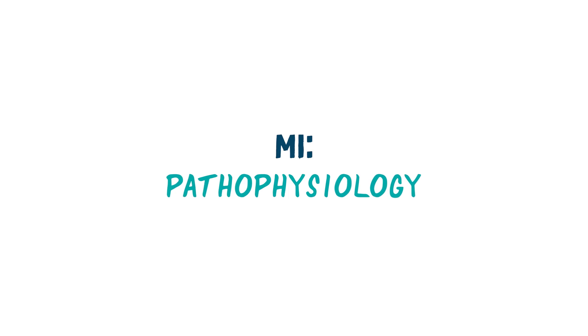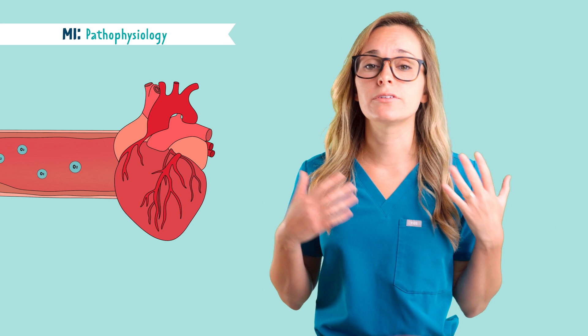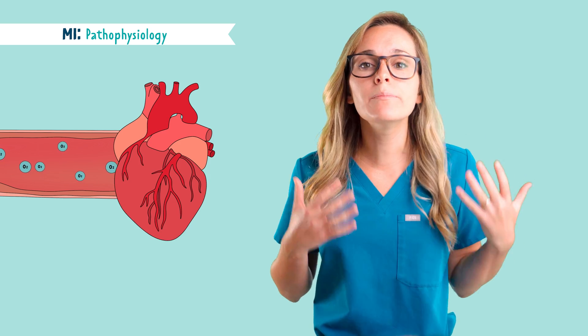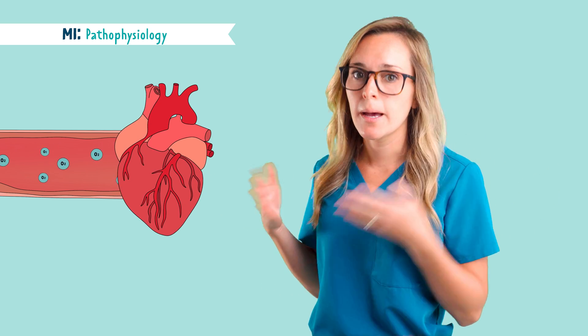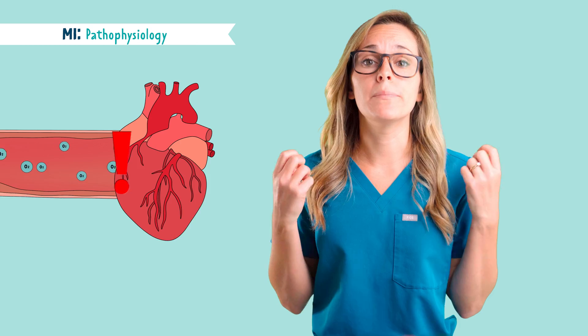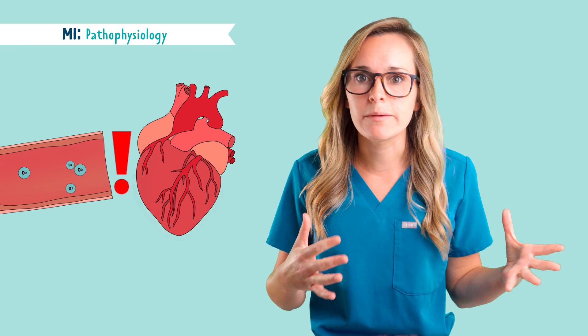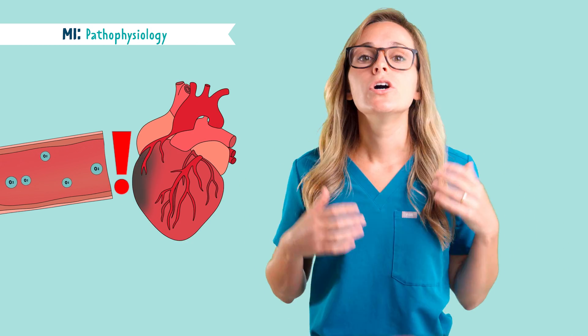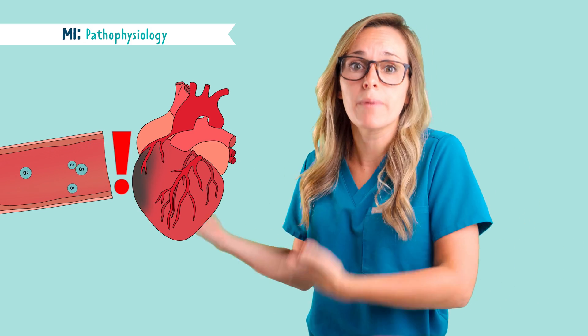Now that we've broken apart the word, let's talk about the pathophysiology of an MI. The heart muscle needs oxygen in order to be able to function and pump blood to the body. But if the arteries in the heart muscle become blocked, the heart muscle starts to die because it's not receiving oxygen, so the heart won't be able to pump blood to the rest of the body.